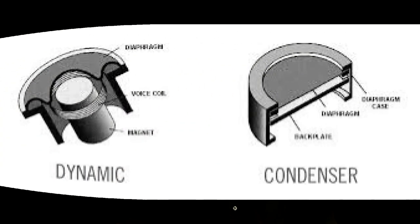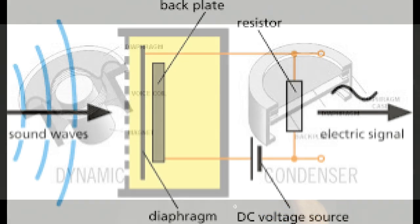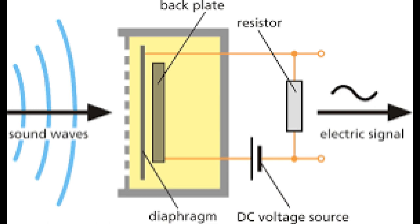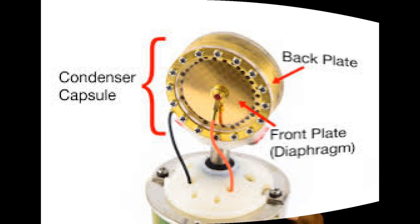Now let's talk about condenser mics. Condenser mics work a lot differently than dynamic mics. A condenser mic employs a conductive diaphragm and an adjacent metal disc called the back plate. They're charged to form two plates of a capacitor, which stores energy. Sound waves striking the diaphragm vary the spacing between those two plates, which varies the capacitance and generates an electrical signal similar to the incoming sound wave.